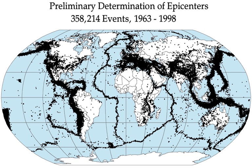The Japan Meteorological Agency Seismic Intensity Scale, the Medvedev-Sponheuer-Karnik Scale, and the Mercalli Intensity Scale are based on observed effects and related to the intensity of shaking. Every tremor produces different types of seismic waves which travel through rock with different velocities: longitudinal P waves, transverse S waves, and surface waves such as Rayleigh and Love waves. Propagation velocity of seismic waves ranges from approximately 3 km per second up to 13 km per second, depending on the density and elasticity of the medium. In the Earth's interior, P waves travel much faster than S waves.